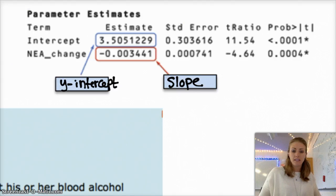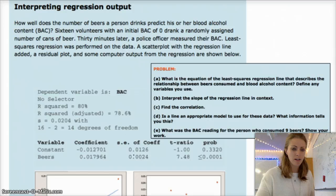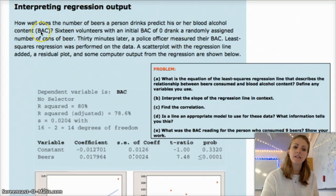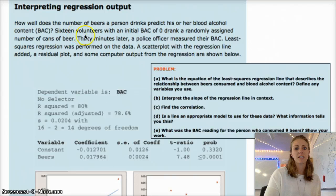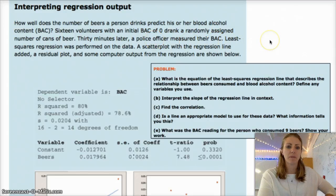So basically the rest of the video is just examples. So here's example number one. We've got how well does the number of beers a person drinks predict his or her blood alcohol content, in the BAC. And so you kind of have an experiment where you have 16 volunteers with a BAC of zero, drink randomly assigned numbers of beer cans. And then 30 minutes later, police officers measure their BAC. And then this is the output.